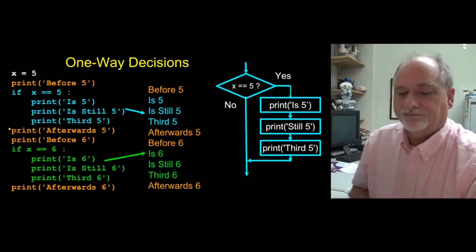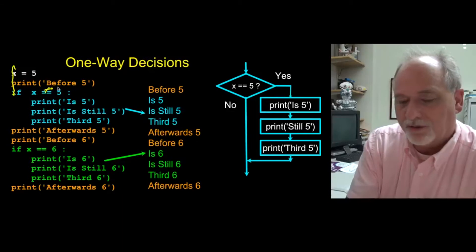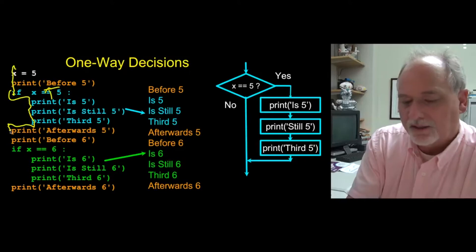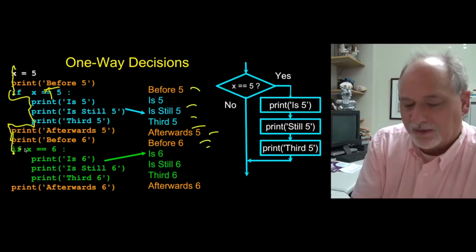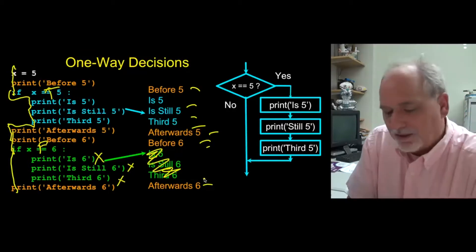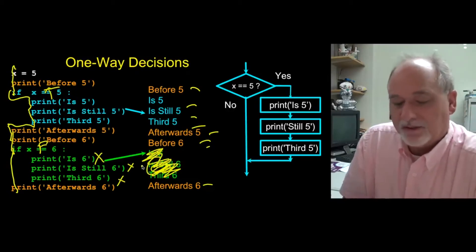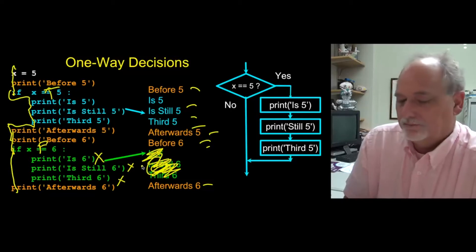So the way this is going to execute, x is 5. We print before 5. Is x equal 5? That's the question mark, and that's true. So it's going to run all these, and then come back, and then continue on, and then de-indent. So all this stuff is running, right? And then it says if x equals 6. Well, that was false. So that skips all of them. So none of these lines of code run. So these actually don't run, and it says afterwards 6. So that's a mistake. Those don't run right there. Because x is not equal 6.